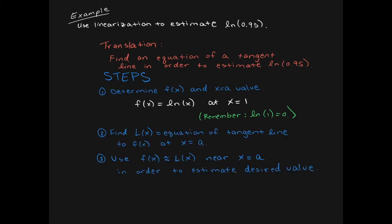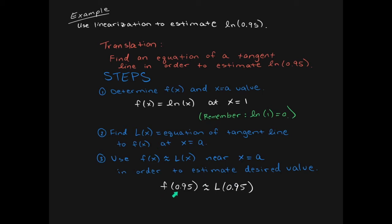Let me run through the rest of the steps. Step 2: we're going to find the equation of the tangent line for ln of x at x equals 1. Step 3: we're going to use the equation of the tangent line in order to estimate ln of 0.95. Instead of plugging 0.95 into the ln function, we're going to plug it into the tangent line. First we need to find the tangent line, but that's the process.